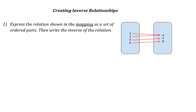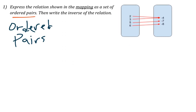So now here we're going to create an inverse relationship. So express the relation shown in the mapping, so here's the mapping, as a set of ordered pairs. Now if it tells you to do it, you cannot skip this step. So first we're just going to transcribe this as ordered pairs. If you're doing this in your book work, I'd like this to be labeled.